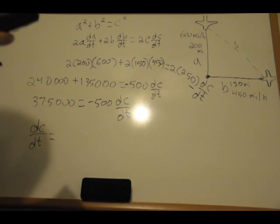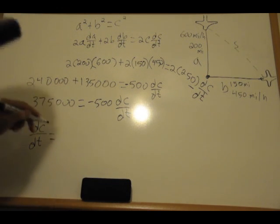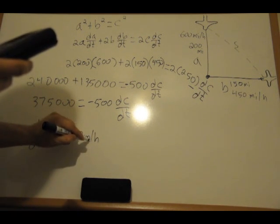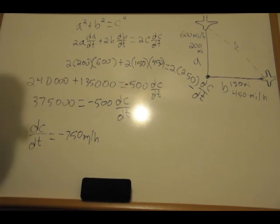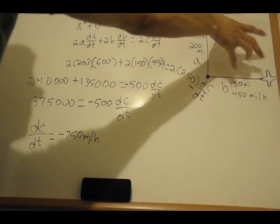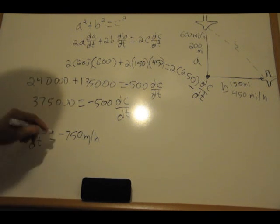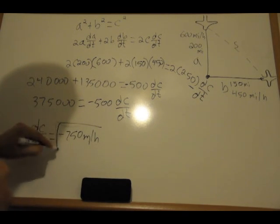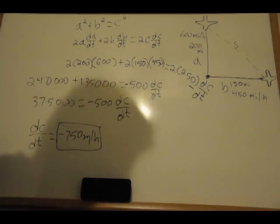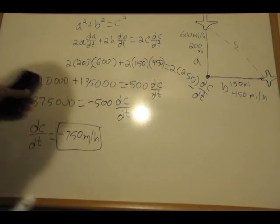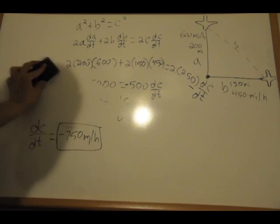All right, so that's minus 750 miles per hour. So now this distance is changing at 750 miles per hour, so that's quite a lot. Now we have this answer here. Now what we want to see is part B - how much time does the air traffic controller have to get one of the planes on a different path?